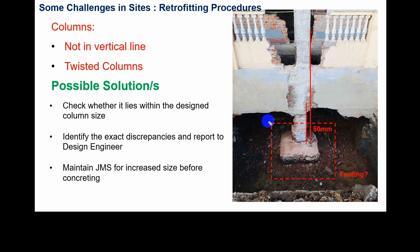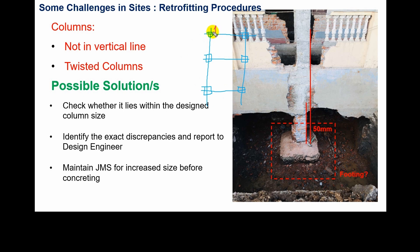First of all, proper safety of the structure should be ensured in the site while doing the column jacketing. All the columns should not be intervened together. Suppose we have a grid like this — there are six columns. The intervention should be done on an alternating basis. The jacketing works from the foundation to the top level should be done in alternating sequence: finish column one first, then proceed to columns two, three, four, five, and six.